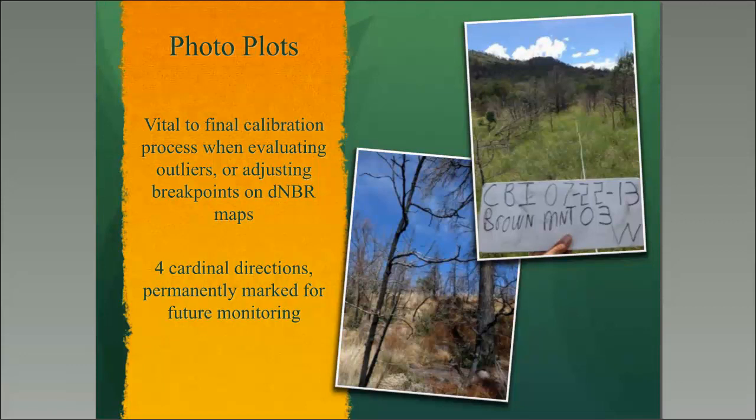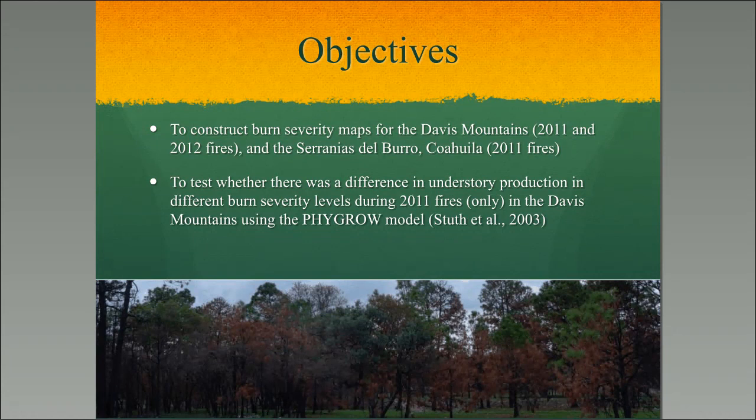Our objectives for this project were to construct the burn severity maps for the Davis Mountains and for the Serrania del Burro, and to test whether there was a difference in understory production in different burn severity levels for the 2011 fires. Unfortunately, we weren't able to test that for 2012. I'll now turn it over to Ed, who is going to talk about how they implemented the FIGRO model, developed at the internet with Jay Angerer.